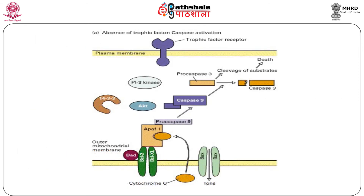We will now talk about caspase activation in the absence of a trophic factor. In the absence of a trophic factor, BAD — a soluble pro-apoptotic protein — binds to the anti-apoptotic proteins BCL2 and BCLXL, which are inserted into the mitochondrial membrane. BAD binding prevents the anti-apoptotic proteins from interacting with BAX, a membrane-bound pro-apoptotic protein. As a consequence, BAX forms homo-oligomeric channels in the membrane that mediate ion flux. Through an as-yet unknown mechanism, this leads to the release of cytochrome c from the space between the inner and outer mitochondrial membrane. Cytochrome c then binds to the adapter protein APAF-1, which in turn promotes a caspase cascade leading to cell death.